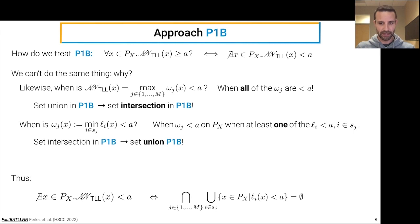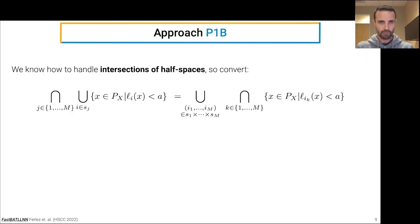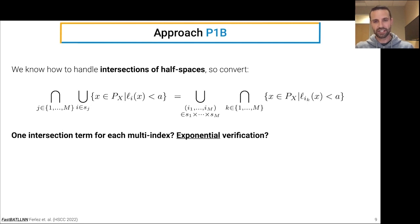So this leads to the following equivalents, where we have no violation if some intersection of unions of half-spaces is empty. So the union of half-spaces is, of course, problematic because this is not directly translatable into a linear program. However, we do know how to handle intersections of half-spaces. So what we can do is just use set operations to convert this set of interest into the following form. So now we have some union over intersections of half-spaces. However, we have one intersection of half-spaces for each term in this multi-index. Now this multi-index is the cardinality of the product of selector sets. So it starts to look like we might get, in the worst case, all the subsets of local linear functions. That is, one intersection term for each subset of local linear functions. This is starting to look like exponential verification, which would be bad.